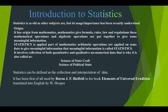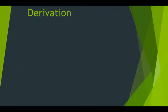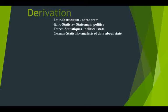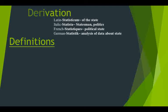Statistics can be defined as the collection and interpretation of data. The word statistics was first used by J.F. Bayfeld in his book, which was translated by Woofter into English. The word has origins in Latin, Italic, French, and German. The Latin word 'statisticum' means 'of the state.' The Italic word 'stasta' means statesman or politics. The French word 'stastika' means political state. The German word 'statistic' means analysis of data about the state.